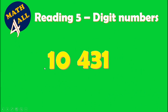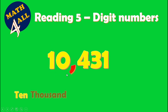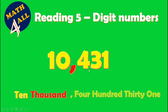Now let's see reading a five-digit number. Here we have one, two, three, four, five digits. As before, count from the right side three digits — one, two, three — then put a comma. This comma is called 'thousand.' Let's read from the left side: four hundred thirty-one thousand.